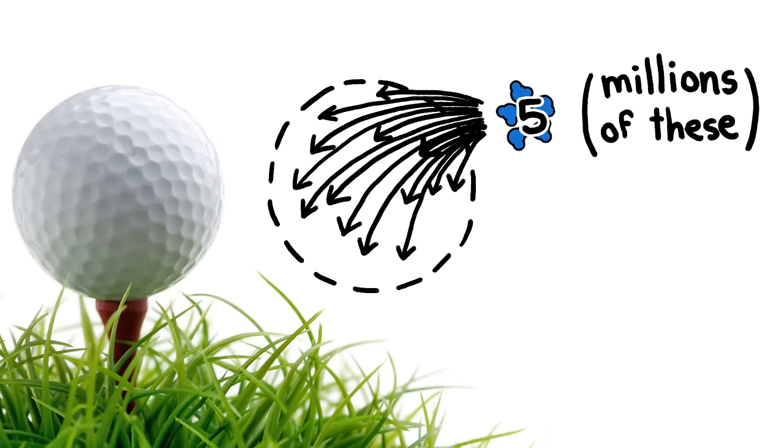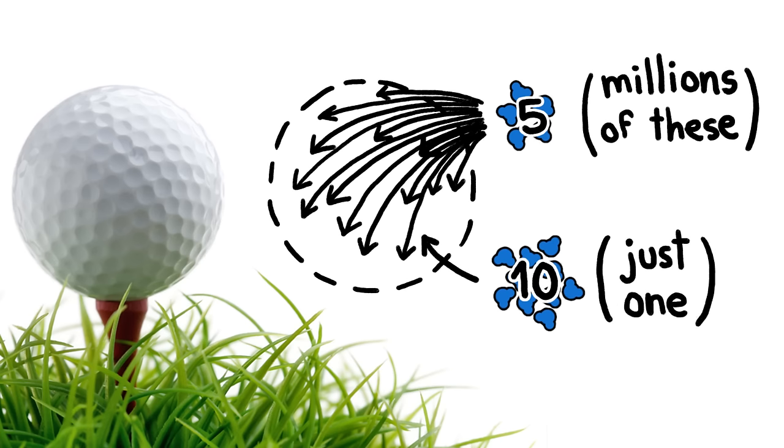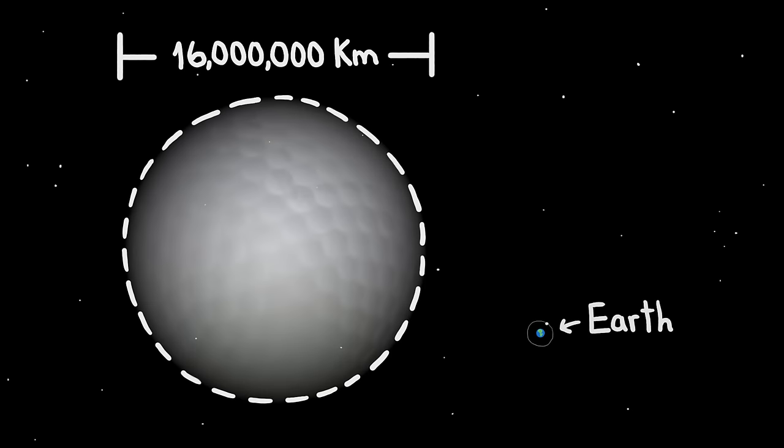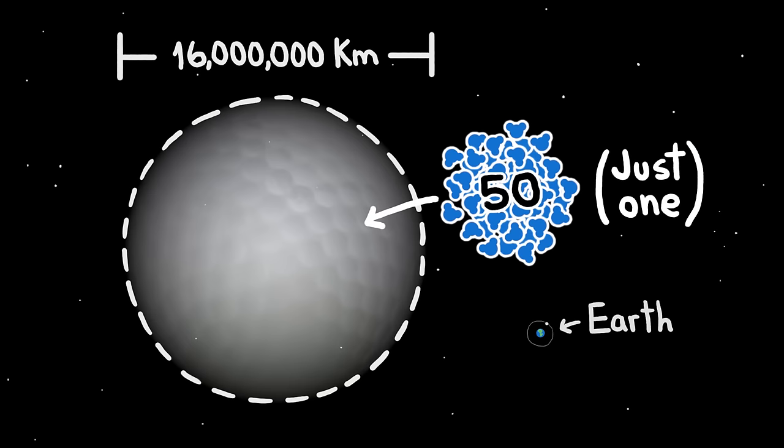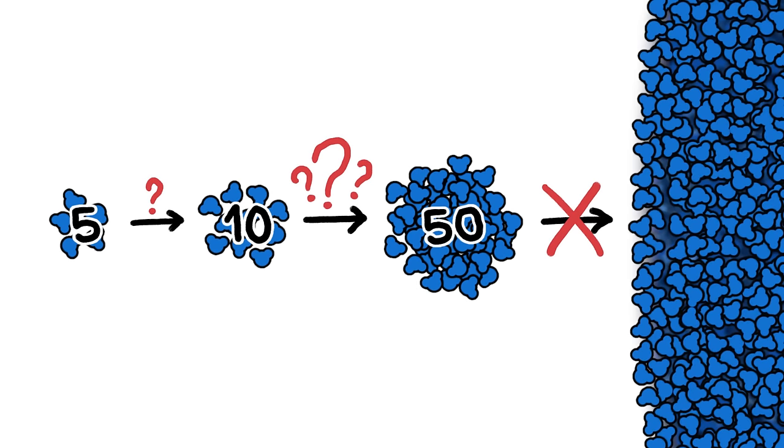And while there are millions of 5 molecule clusters in a golf ball-sized volume of air at dew point, odds are that only one of those clusters will grow to a size of 10. And you'd need a golf ball of air 10 million miles across to find a single 50 molecule cluster. Which basically means that clusters of water molecules never get to that 150 million mark on their own.